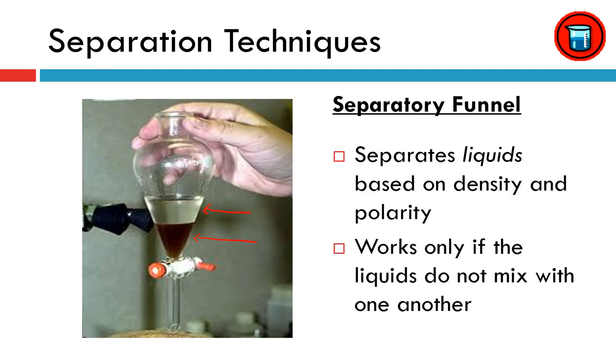And the way this works is just kind of a fancy way to scoop out one of the liquids. You would turn this little nozzle and the bottom layer is going to drain out. You can control the speed by how wide the nozzle is open. And you can trap the remainder of the liquid up in the separatory funnel.